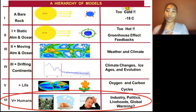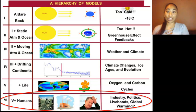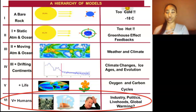On a hierarchy of models, we've been through the physical, chemical, and biological aspects to understand how the earth was created. We now move on to the last stage, and that is the human aspect. Here is where we understand the social, political, and economic factors.